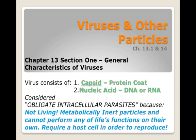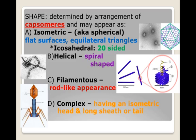The first characteristic we use to classify viruses is shape, determined by the arrangement of capsomeres — repeating subunits that make up the external portion of the virus. Viruses can appear as isometric, or spherical. Looking at the diagram, you can see flat surfaces made of equilateral triangles; there are 20 of them, making this a 20-sided icosahedron, described as icosahedral.